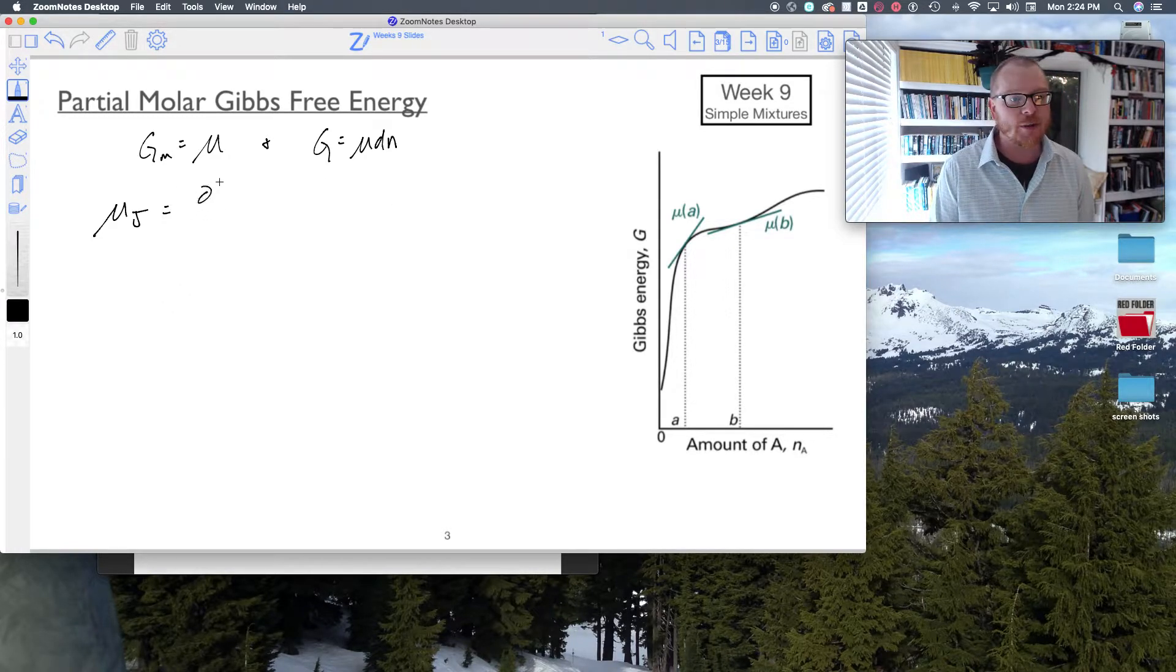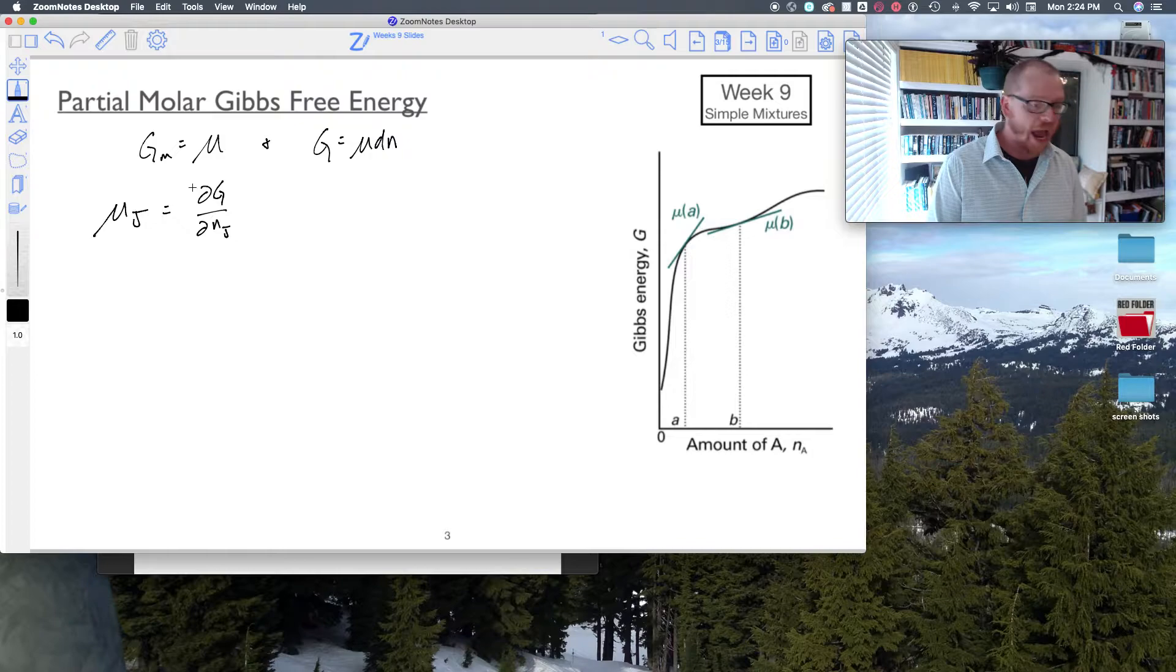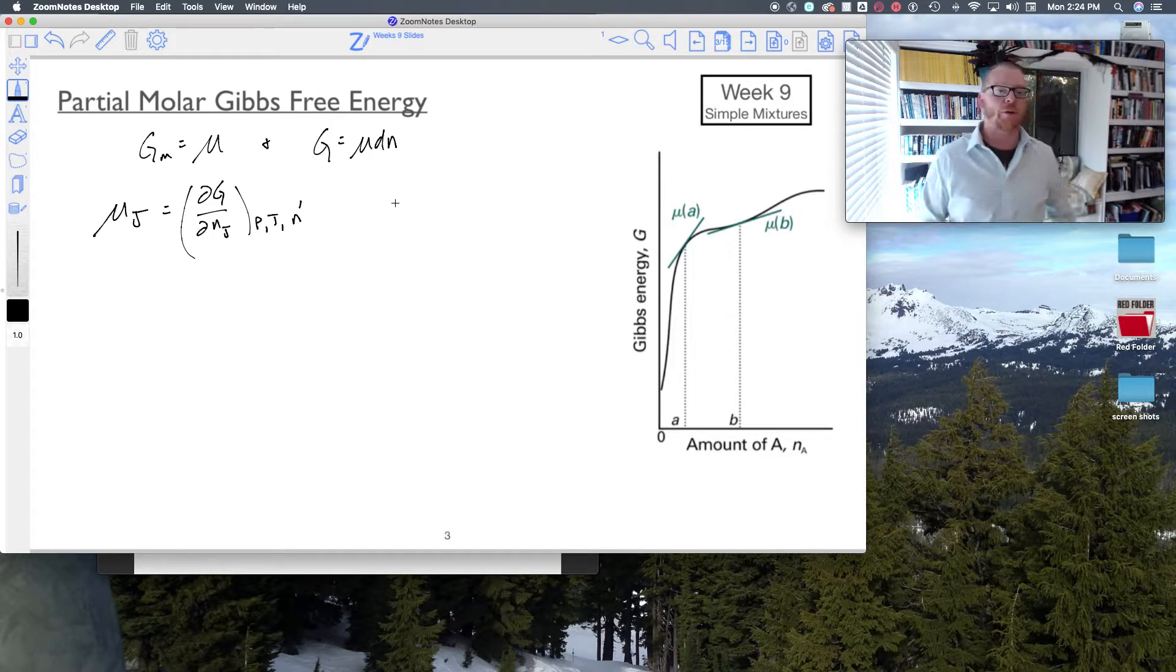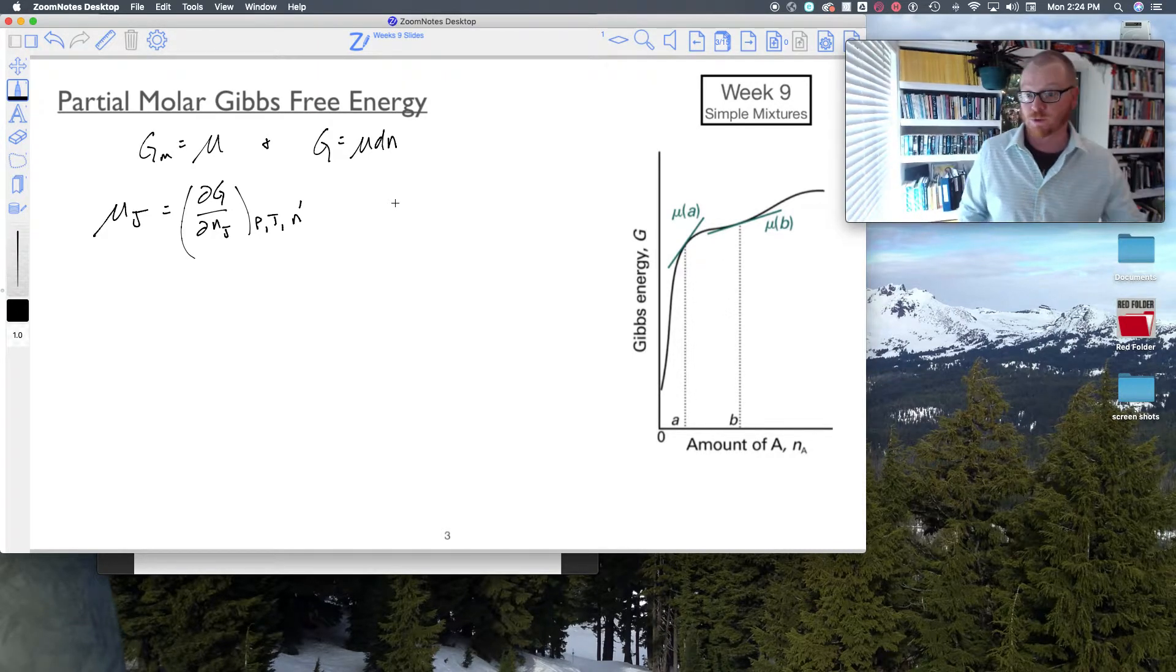So that is the partial of G with respect to the partial of the number of moles of species J. And of course that's all at constant pressure, constant temperature, and assuming that the other component is at constant number of moles as well.